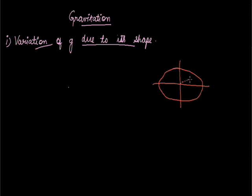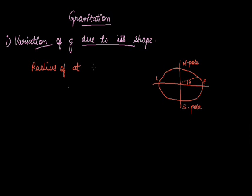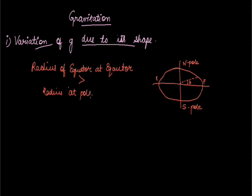We have an imaginary line drawn. This is angle lambda. The horizontal line represents the line of equator. This is our North Pole. This is our South Pole. The radius of Earth at the equator is greater than the radius at the poles.